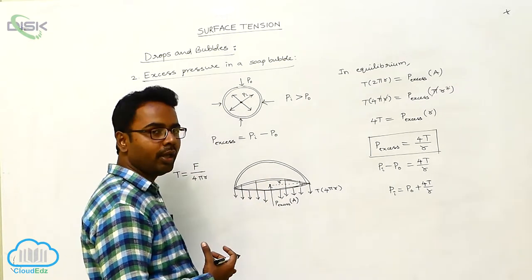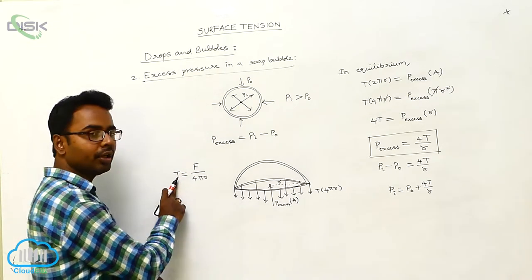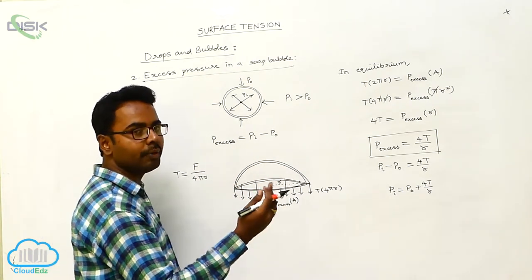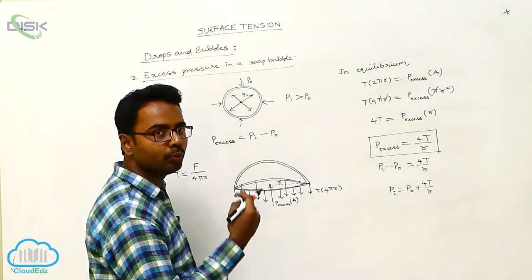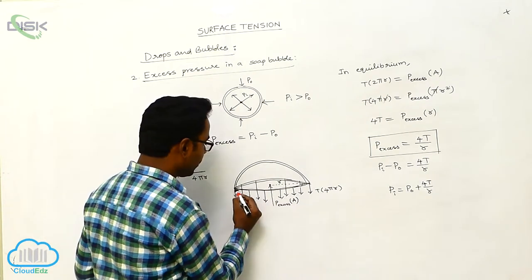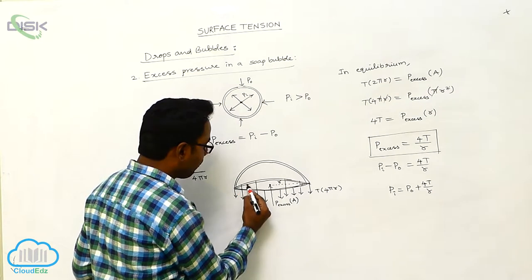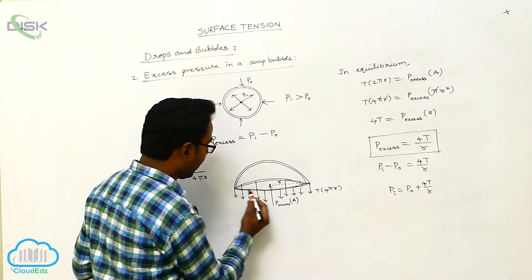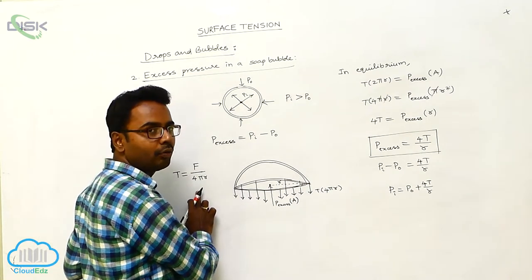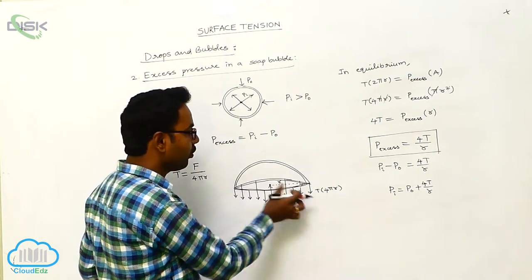The downward force acting on the upper half is equal to T into 4πR. We know surface tension T equals force F divided by length. This downward force acts along 2πR on the upper surface and 2πR on the lower surface, totally 4πR. So the downward force is acting along the circumference of the upper and lower surfaces — totally along 4πR length. Therefore T equals F divided by 4πR, so downward force F equals T into 4πR.